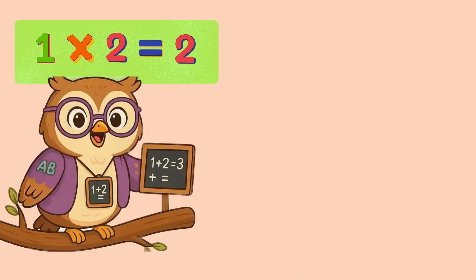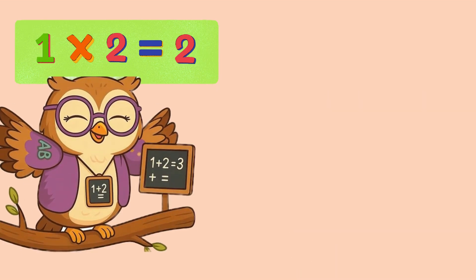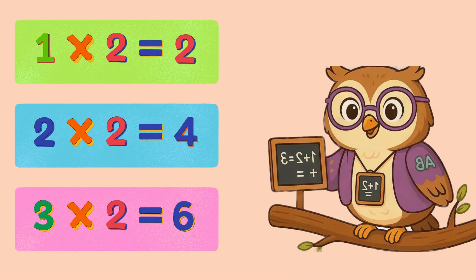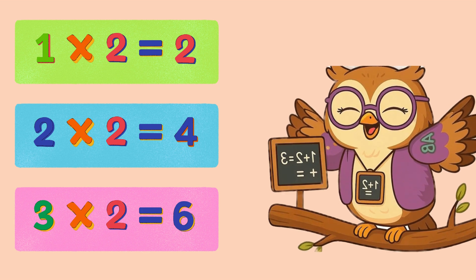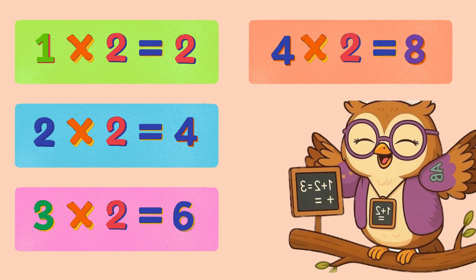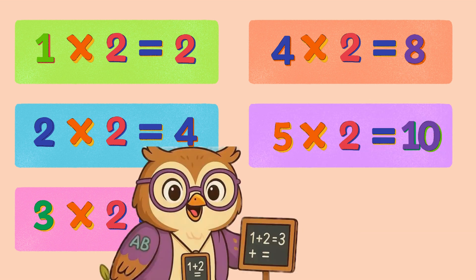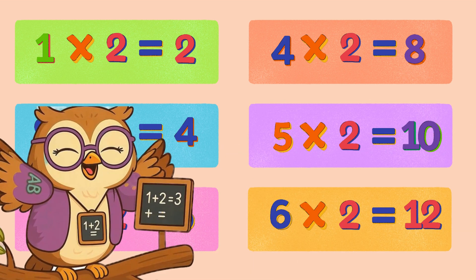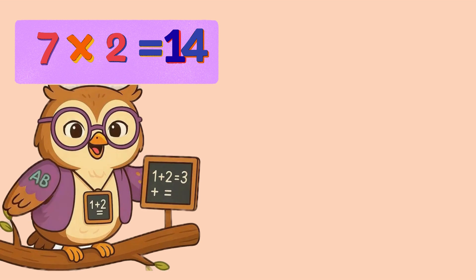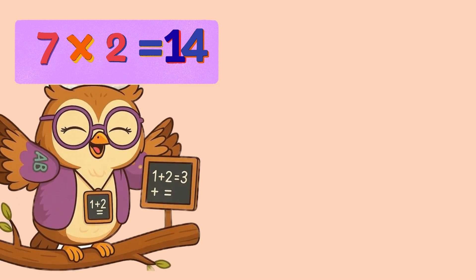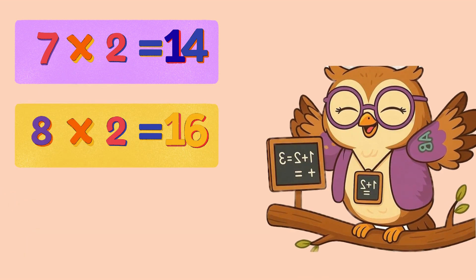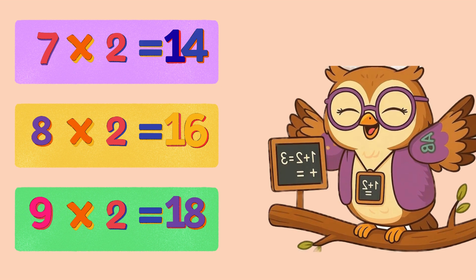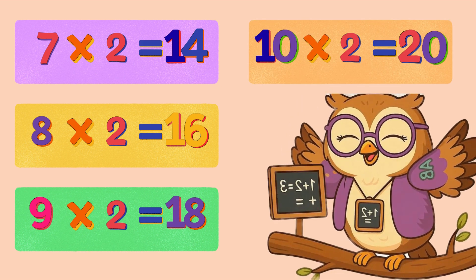Let's repeat the song. One times two is two. Two times two is four. Three times two is six. Four times two is eight. Five times two is ten. Six times two is twelve. Seven times two is fourteen. Eight times two is sixteen. Nine times two is eighteen. Ten times two is twenty.